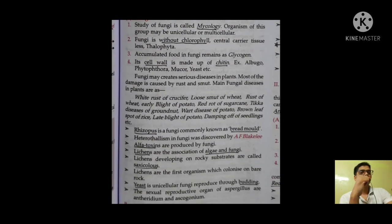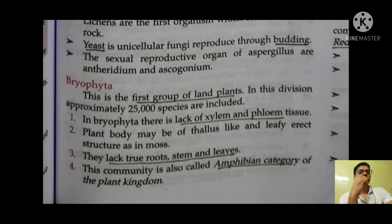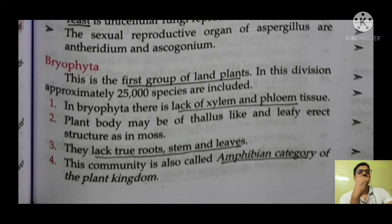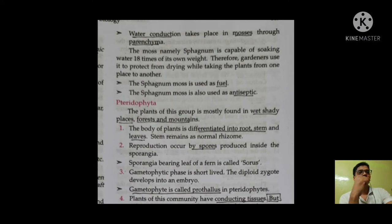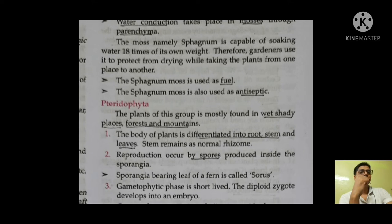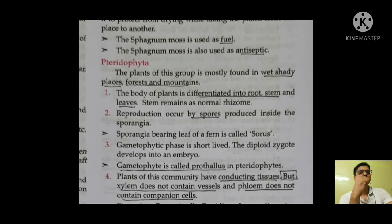Next in the cryptogams is bryophyta. Cryptogams are non-flowering, seedless plants. Bryophyta is the first group of land plants. In bryophyta there is a lack of xylem and phloem tissue, which are associated with the transport of materials in plants. Bryophytes lack true roots, stems, and leaves. A very important point: bryophyta is called the amphibian of the plant kingdom. Water conduction in mosses takes place through parenchyma.